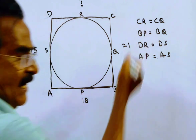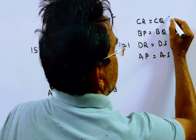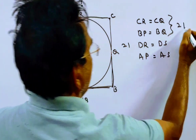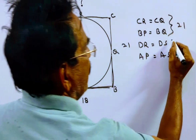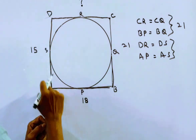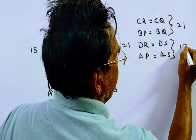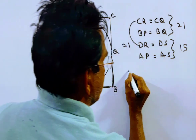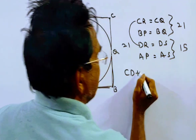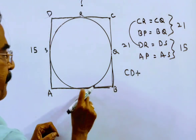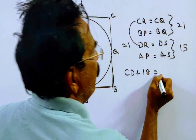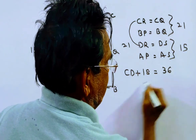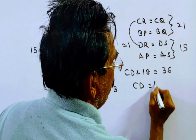Friends, now let us add these four. C,Q plus B,Q — that is C,B — is 21. And D,S plus A,S is 15. C,R plus D,R is equal to C,D. C,D plus B,P plus A,P — that is 18. So friends, C,D plus 18 is equal to 21 plus 15, which is 36. Therefore C,D is equal to 18 cm.